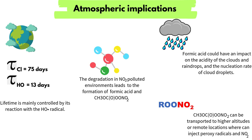The atmospheric lifetimes were 75 days for chlorine and 13 days for hydroxyl, indicating that the lifetime of MG is mainly controlled by its reaction with the hydroxyl radical. The degradation in nitrogen dioxide polluted environments leads mostly to the formation of peroxynitrate and formic acid. The peroxynitrate is relatively stable and can be transported from its formation site to high altitudes or remote locations, where its thermal decomposition can inject peroxyl radicals and nitrogen dioxide.